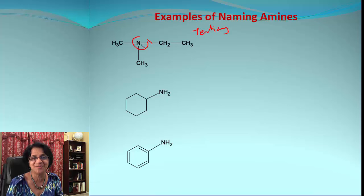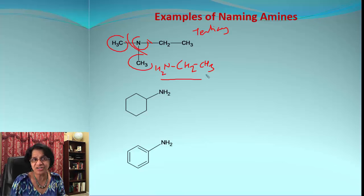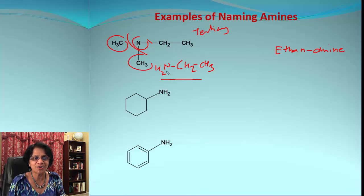Imagine if that was only NH2 group here, how will you name this? The parent chain is two carbon atoms so it will be ethane and you're going to remove that E and add the word amine. The two hydrogen atoms are substituted by methyl groups so we can say N,N-dimethyl. So we got the compound N,N-dimethylethanamine.